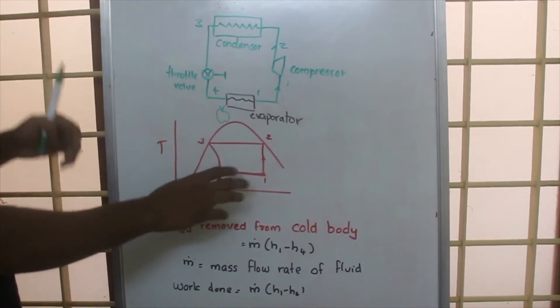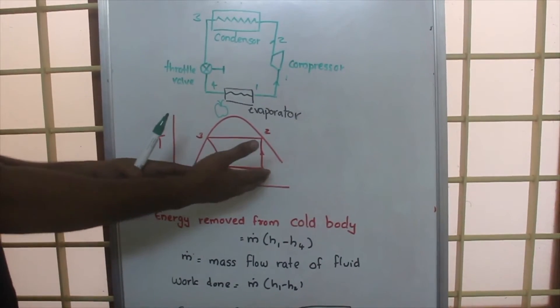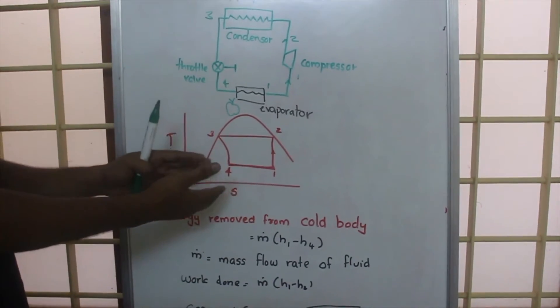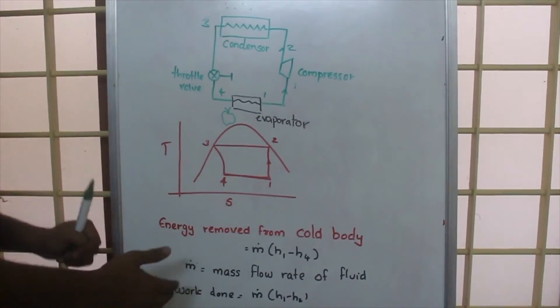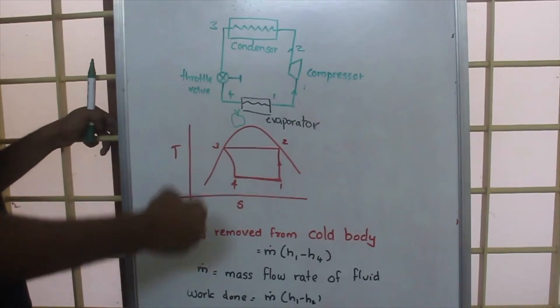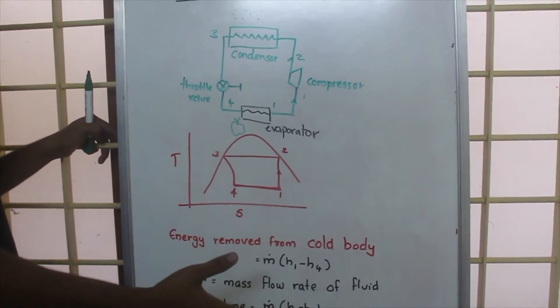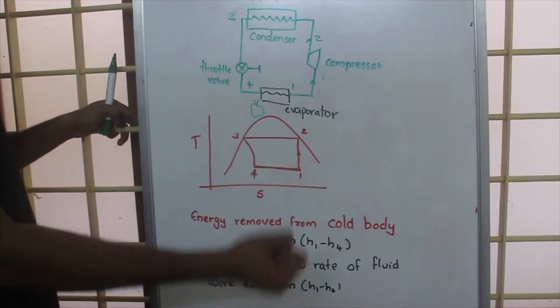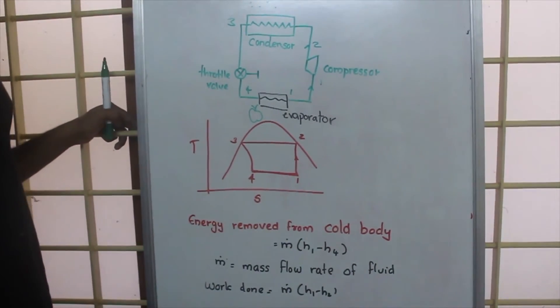If the enthalpy at point 1 is h1 and at point 4 the enthalpy is h4, then h1 minus h4 will be the heat absorbed by the working fluid per kilogram. So if the mass flow rate is m dot, then the heat absorbed will be m dot times (h1 minus h4).